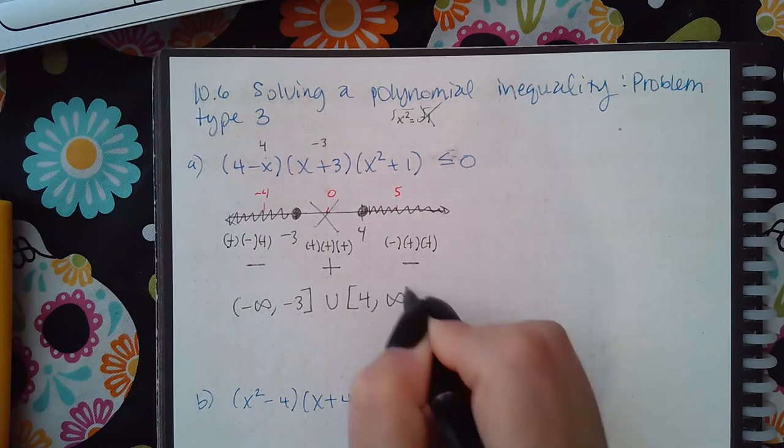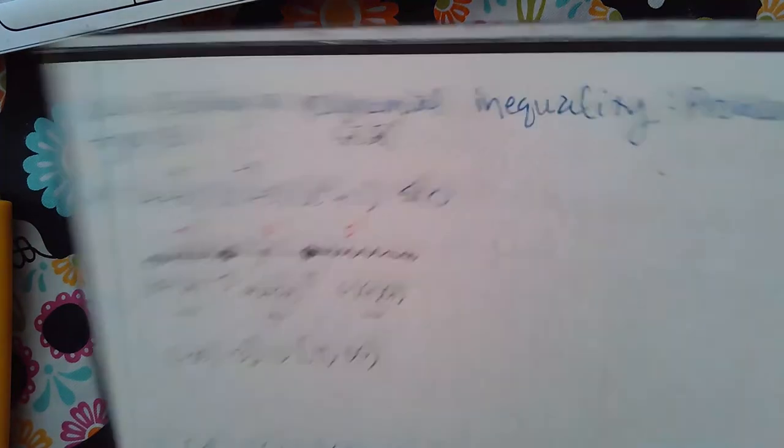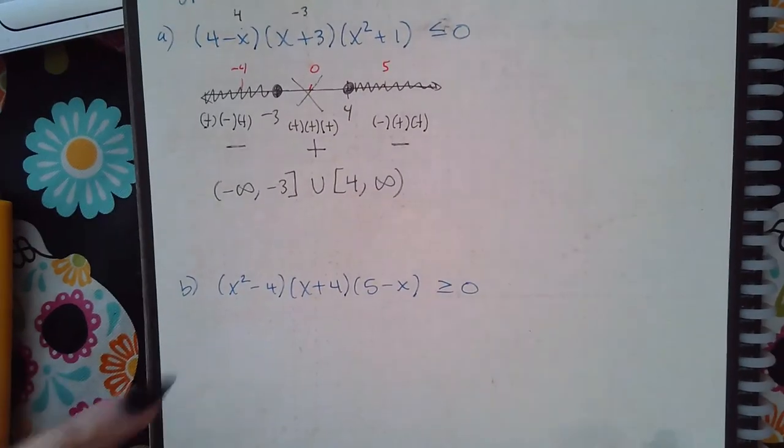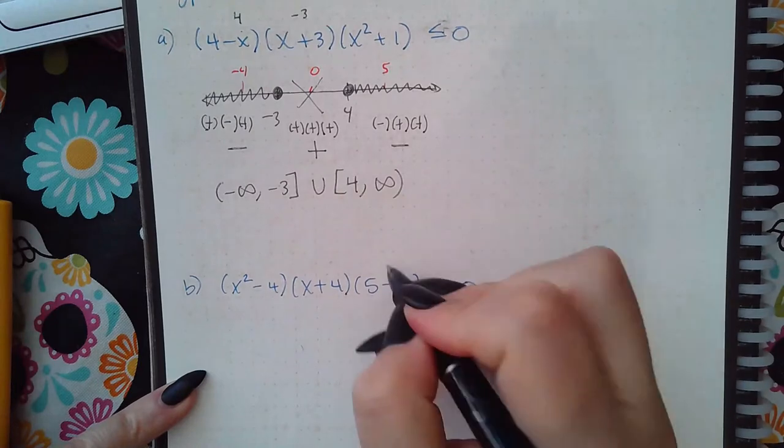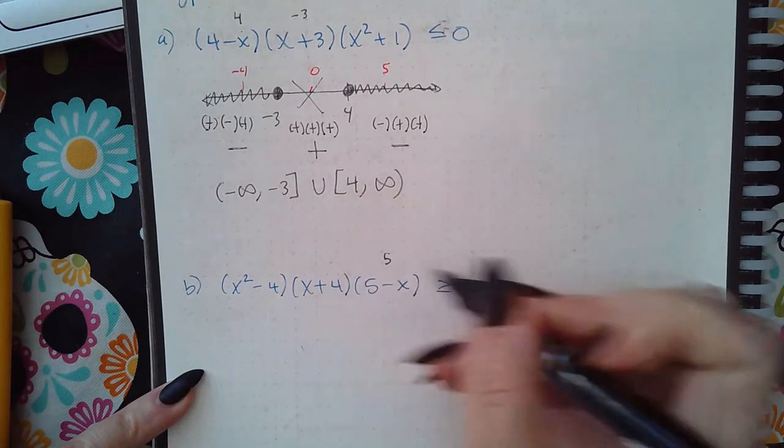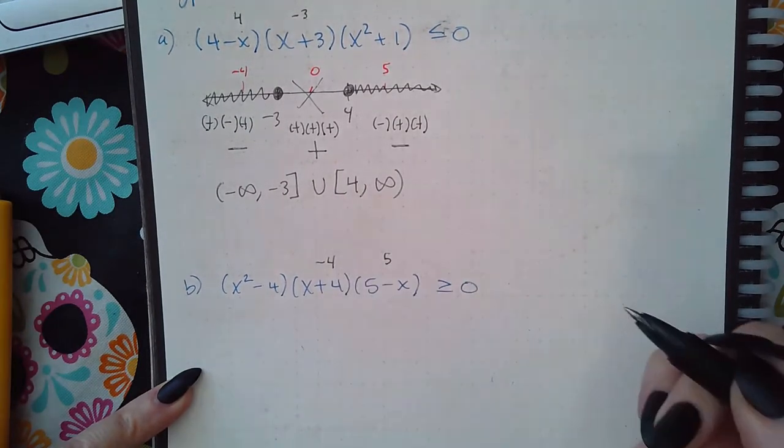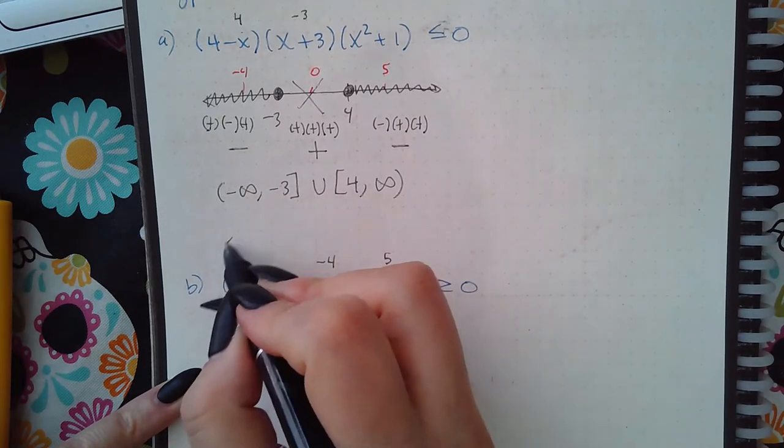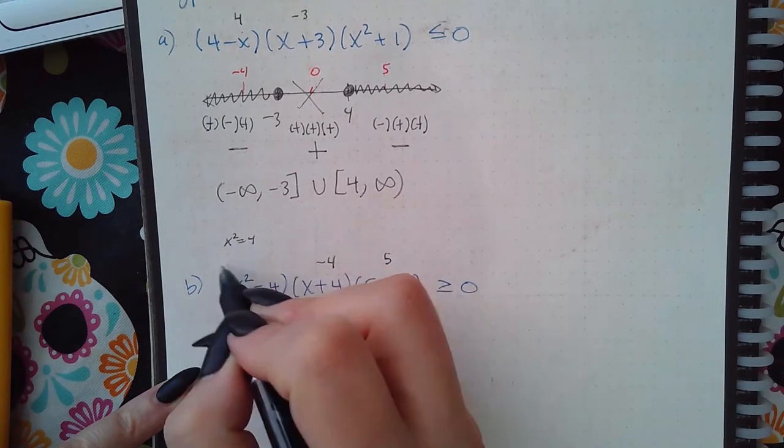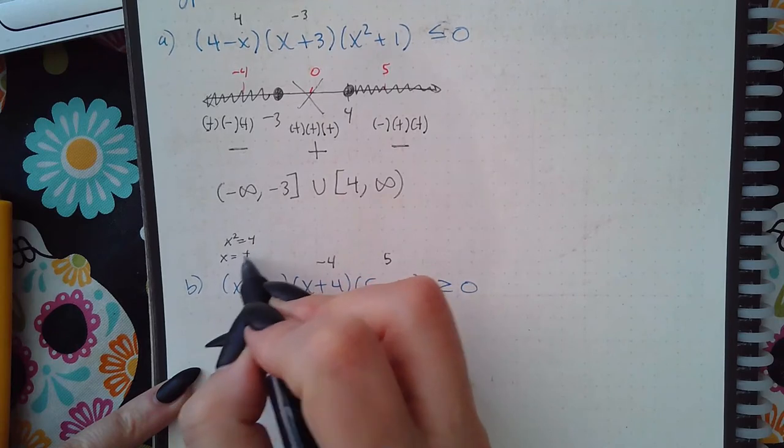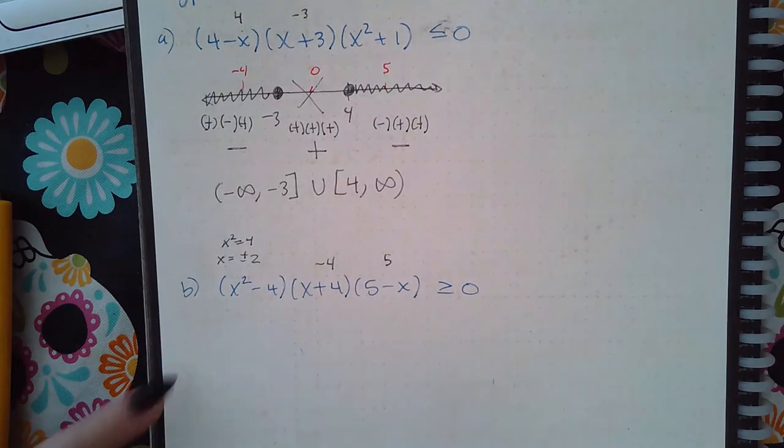Now this one is different. If I set this factor equal to 0 I get 5. If I set this factor equal to 0 I get negative 4. If I set this factor equal to 0 I get x squared equals 4, or x equals plus or minus 2, because you can take the square root of 4 and it's plus or minus 2.